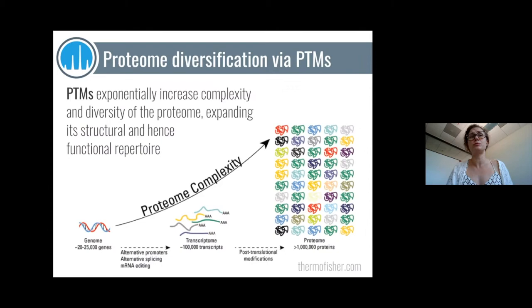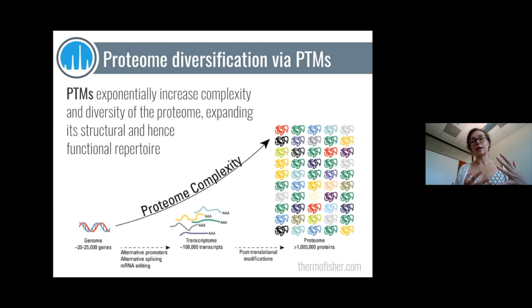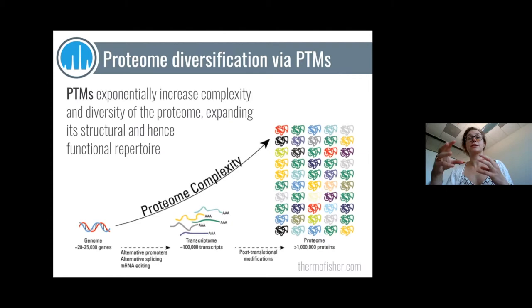The main function of PTMs, as most of you probably know, is diversification of the proteome. Depicted here is the central dogma: the genome is transcribed into messenger RNAs, which are translated into proteins. At that point there is exponential growth in complexity, but if you take the final protein product and allow for the great number of PTMs possible on various amino acids, you end up with so many more protein variants. That's a cool and dynamic way for cells to expand their functional repertoire and impact protein structure.